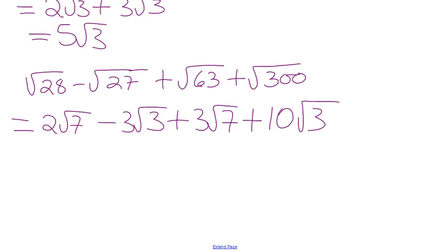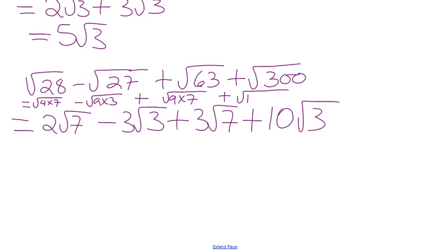You might write this as root of 4 times 7 — looking for a perfect square. We don't want 2 times 14 because we can't simplify that. So we need 4 times 7, and 9 times 3 — one factor must be a perfect square. Then we split it out: root 4 root 7 becomes 2 root 7. Root 9 root 3 becomes 3 root 3. Root 9 root 7 becomes 3 root 7. Root 100 root 3 becomes 10 root 3.